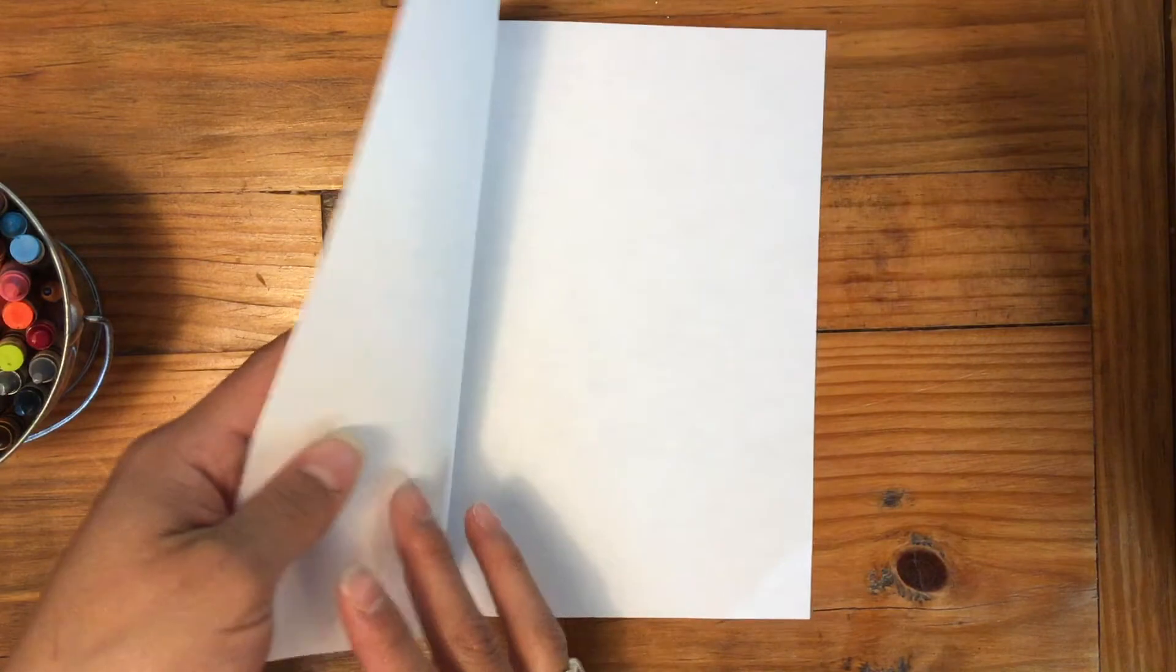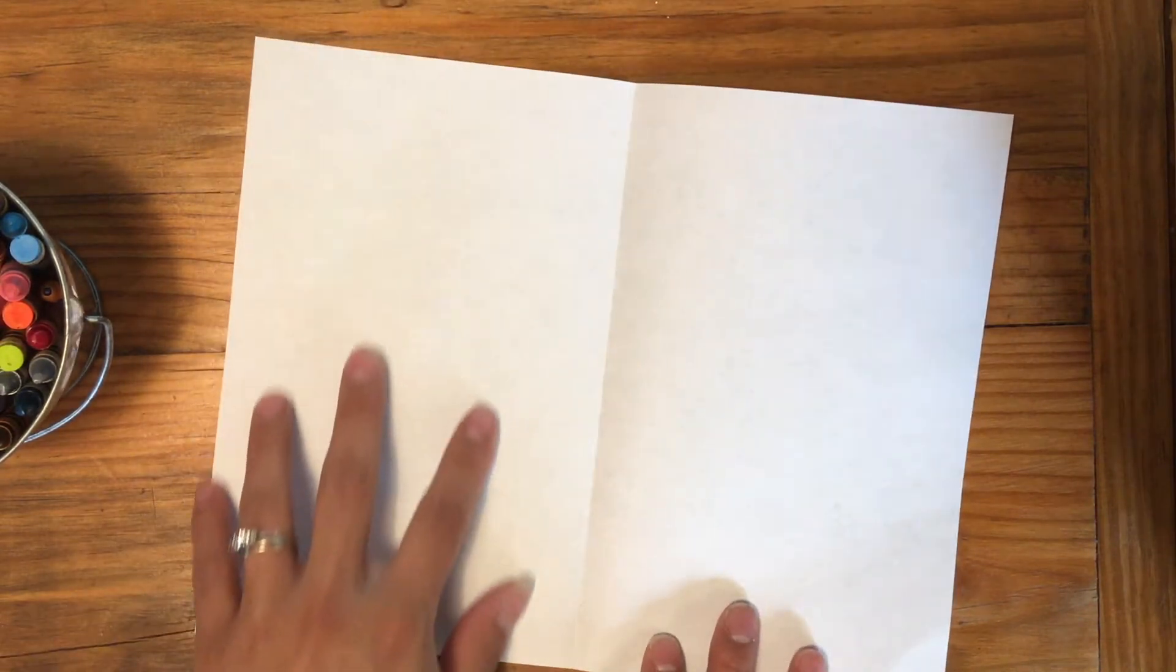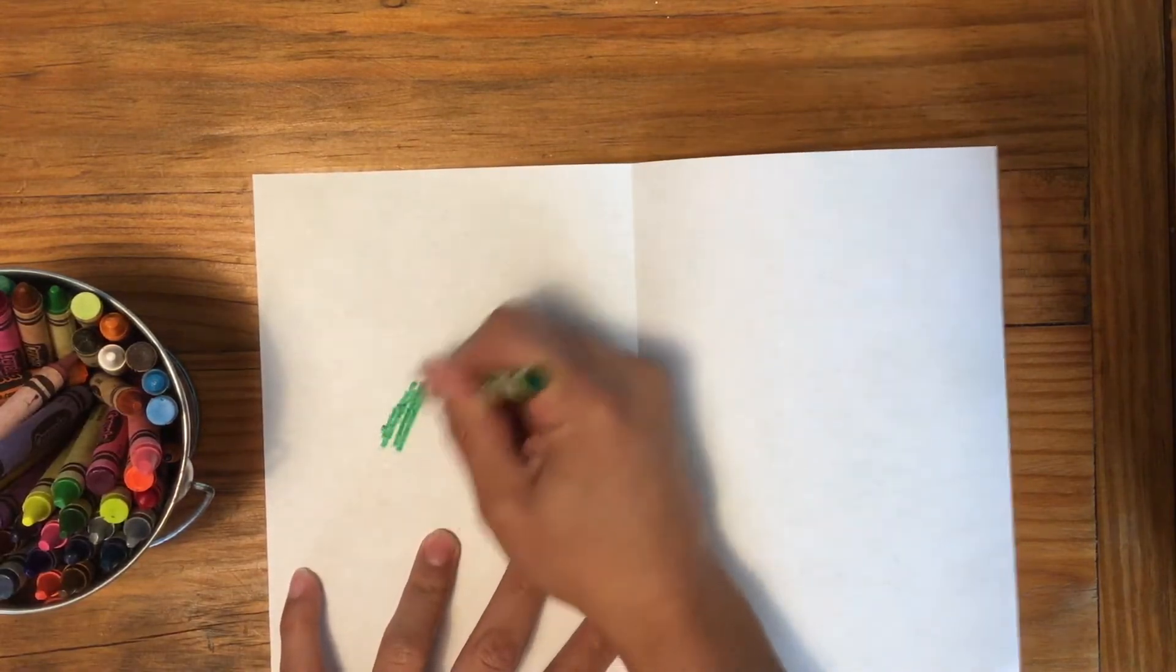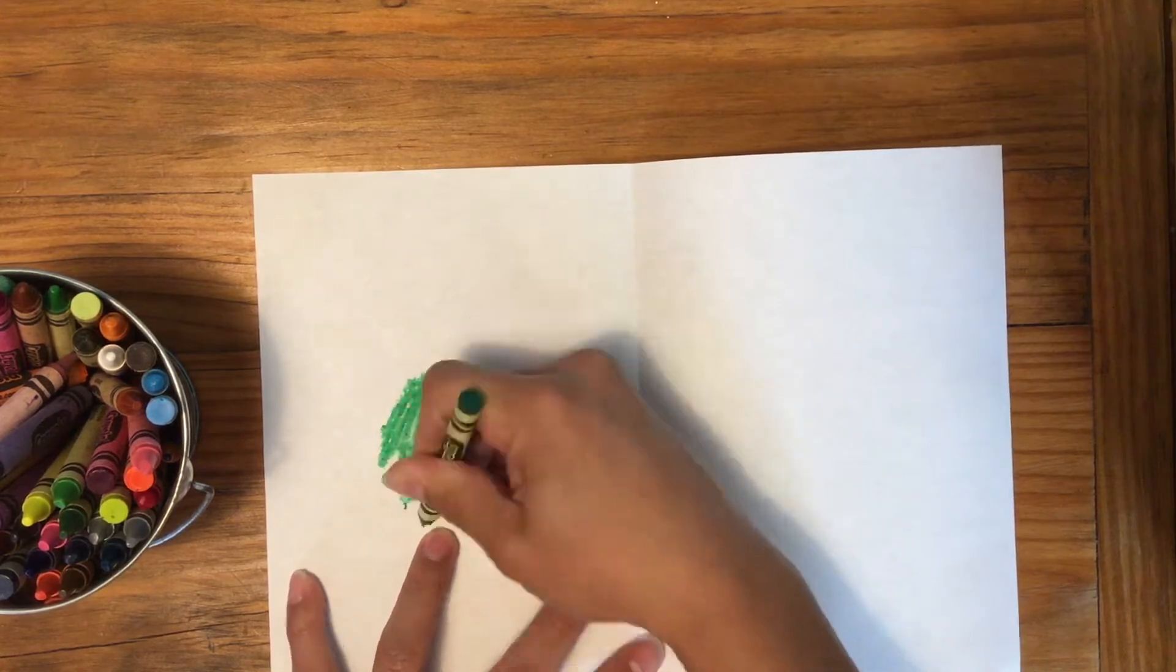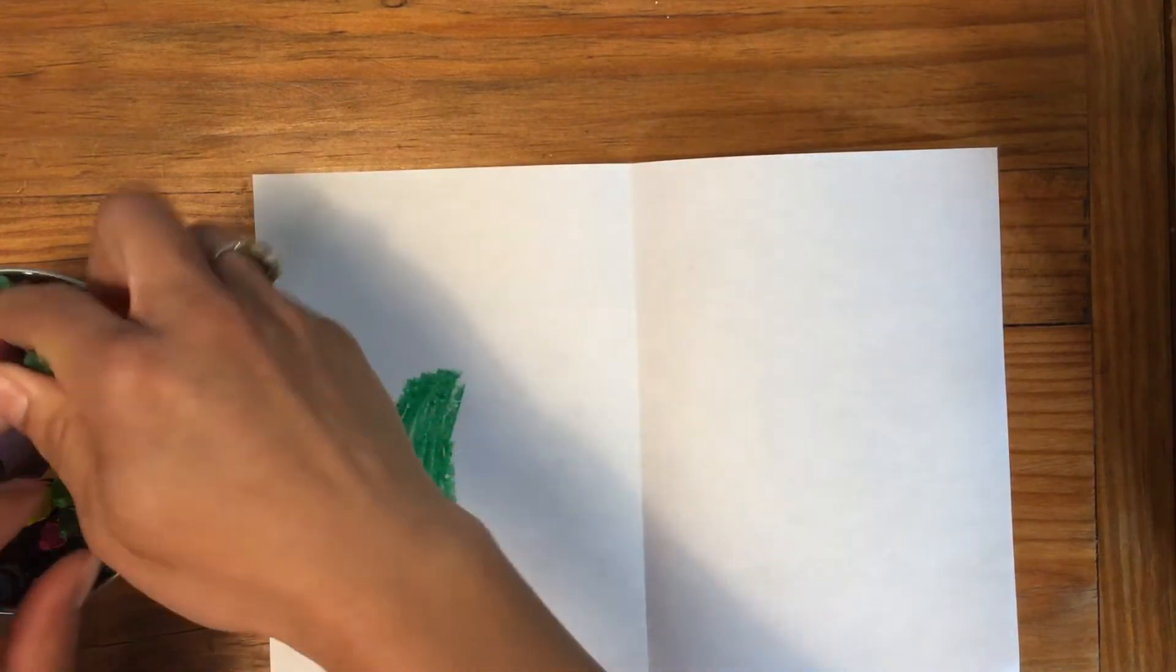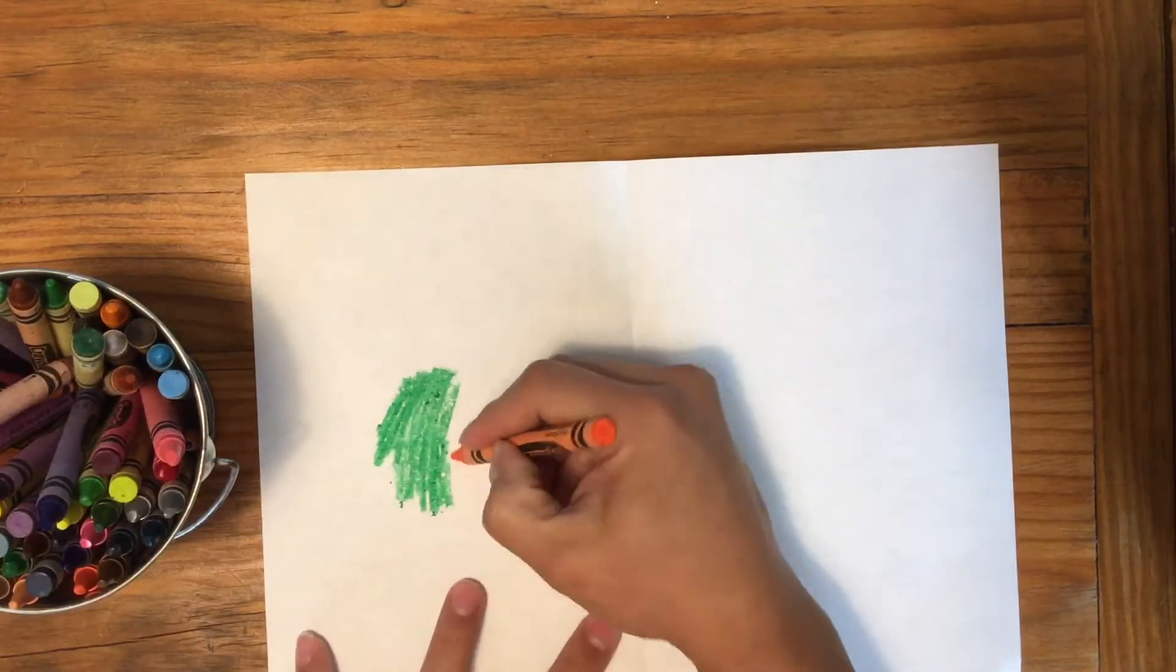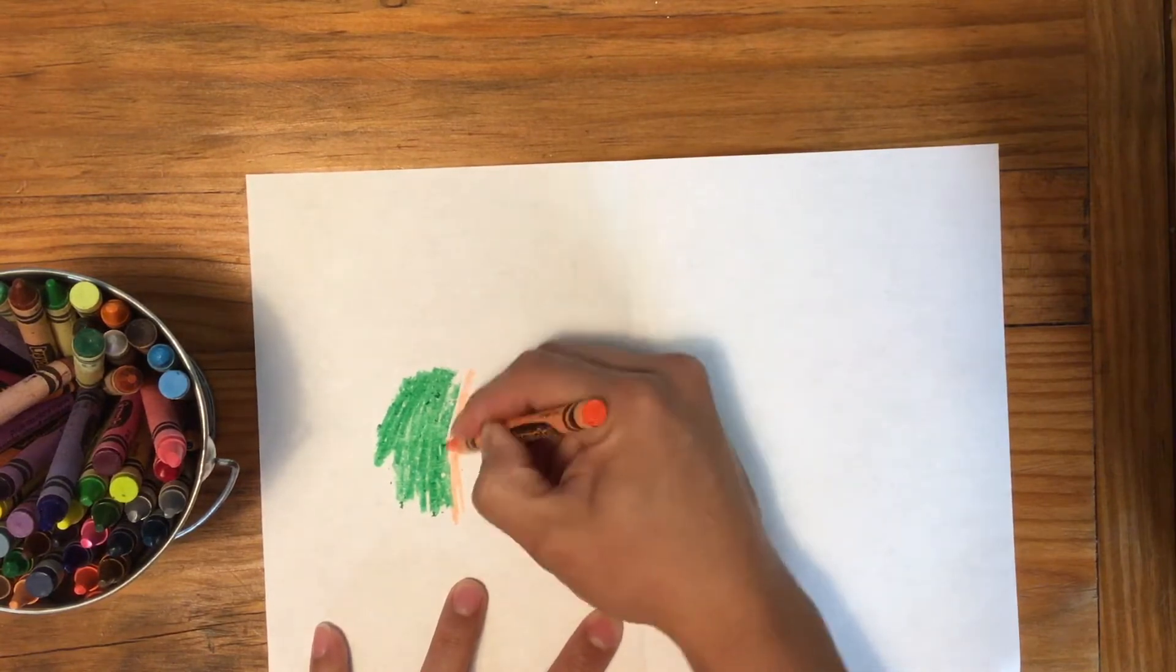Now when I open it back up I'm going to color just this side all rainbow using my crayons. One thing you want to make sure while you are coloring is that you press hard and you want to make sure you fill up the entire space.